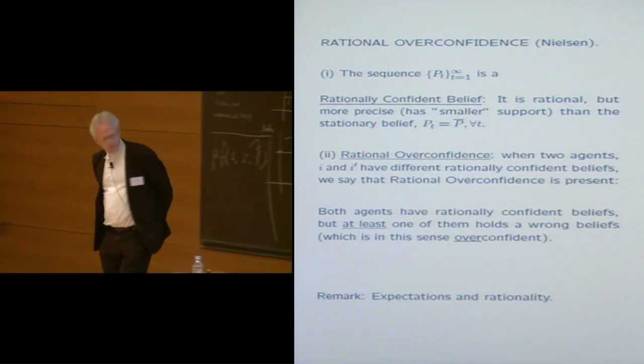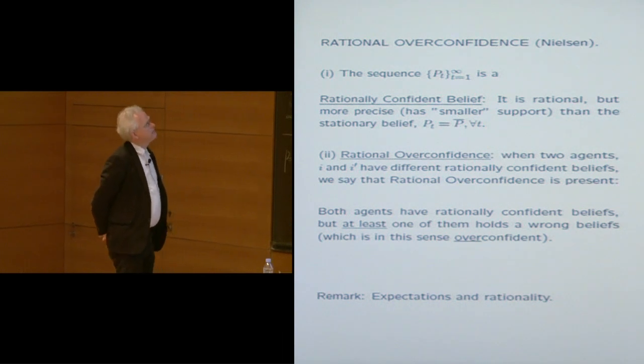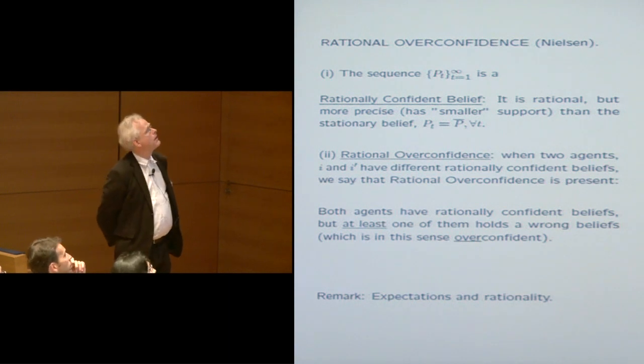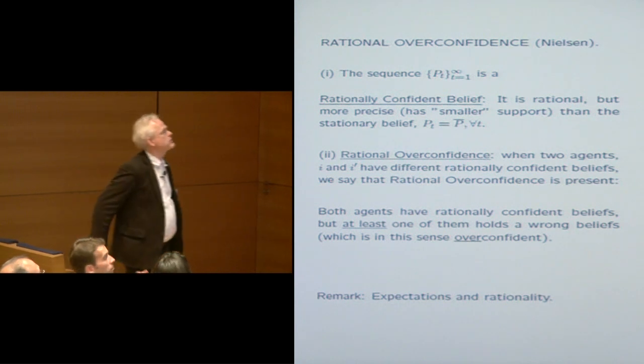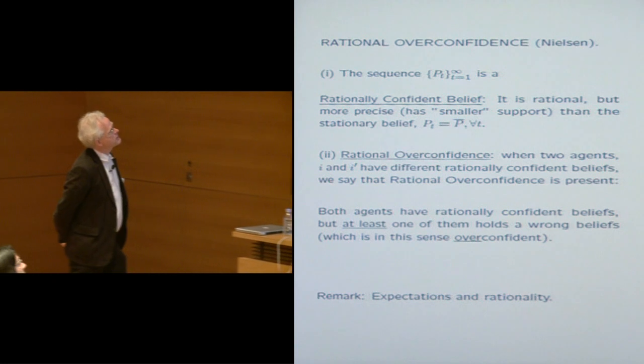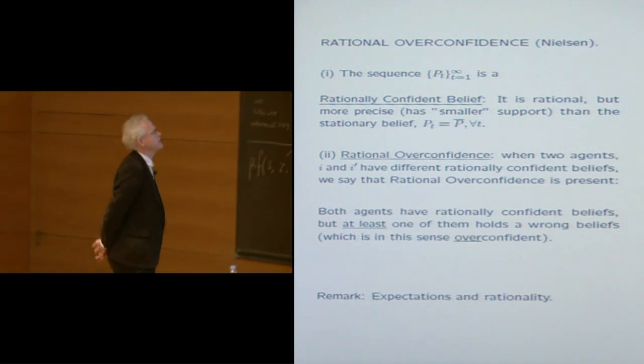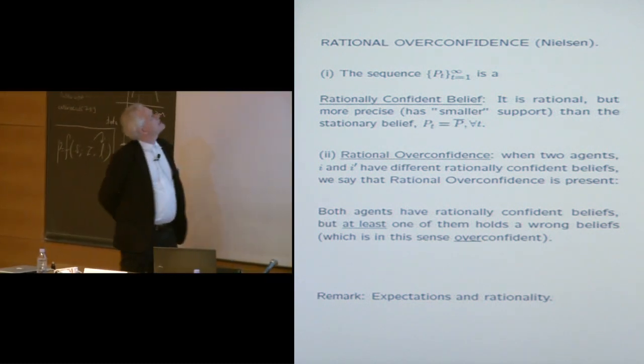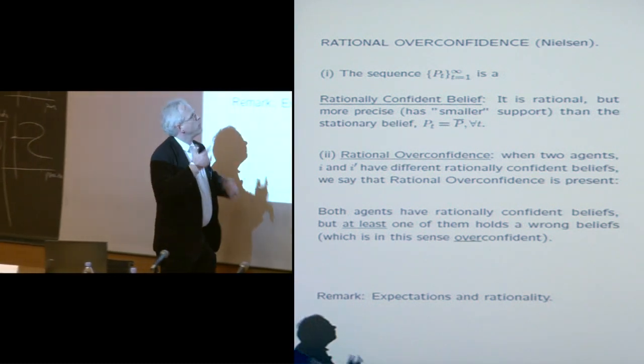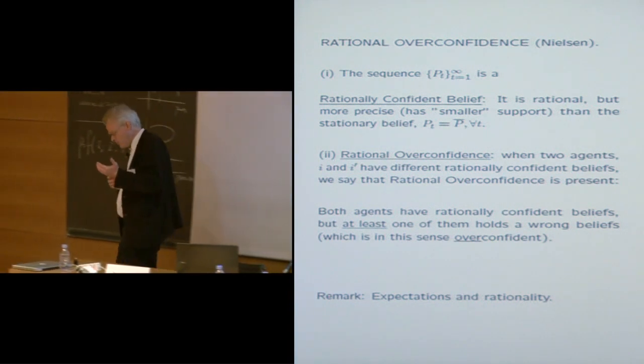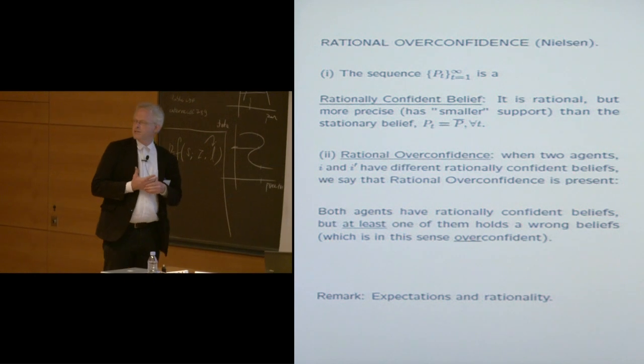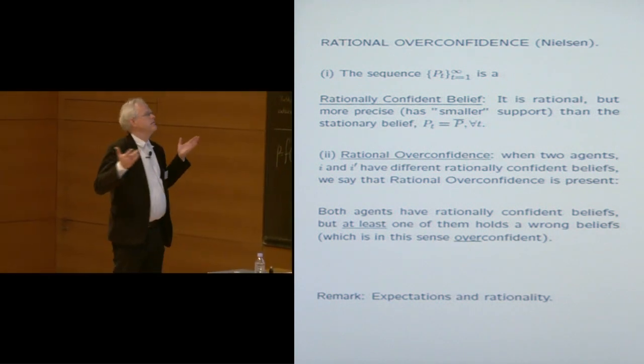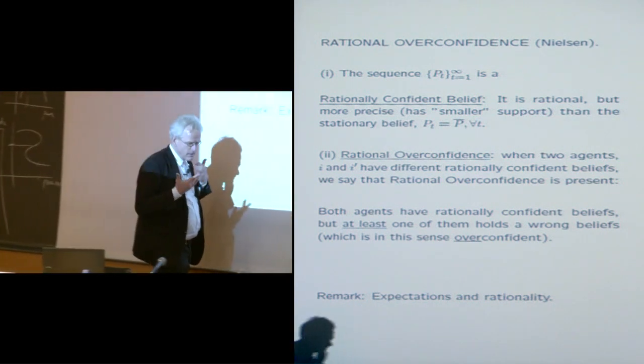Rational overconfidence is a concept I have presented in another paper. The idea is that we observe people having beliefs which... One more time? So that belief is a draw from... Yes, yes. We're staying in that coin toss example throughout the presentation. So this sequence, this non-stationary sequence of beliefs, so this non-stationary belief is rational but it's more precise in the sense that it has a smaller support than the stationary belief where you believe that the world is the same at every point in time. So you believe that sometimes there's a high probability of head, sometimes there's a lower probability of head. In that sense your prediction is more precise.